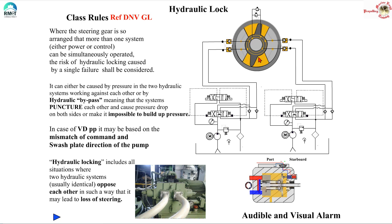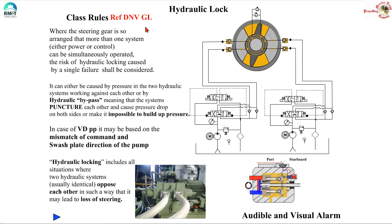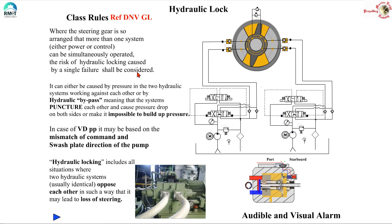Now let us look at the last part of this topic: the hydraulic lock. In very simple terms, hydraulic lock means locking up the oil so the rudder doesn't move. But when we talk about the hydraulic lock alarm we need to understand it more carefully. In the words of DNV GL: where the steering gear is arranged so that more than one power control system can be simultaneously operated, the risk of hydraulic locking caused by a single failure shall be considered — meaning two equal and opposite hydraulic forces acting on the rudder at the same time.